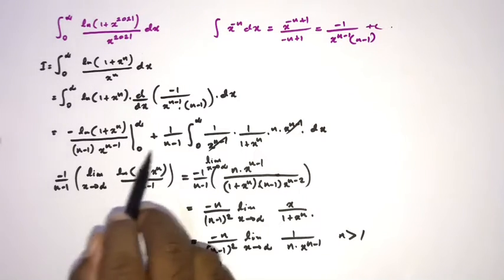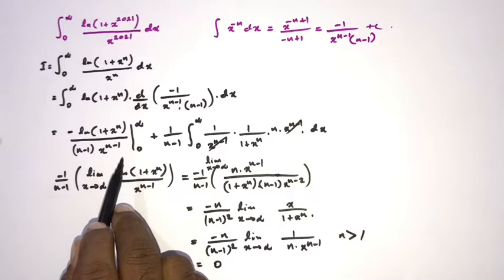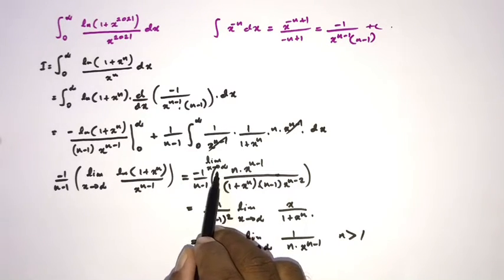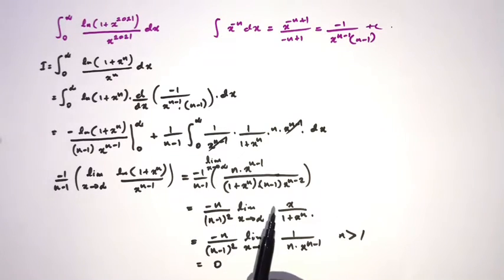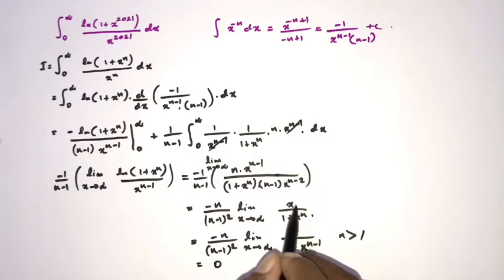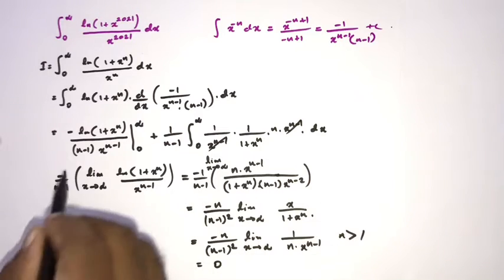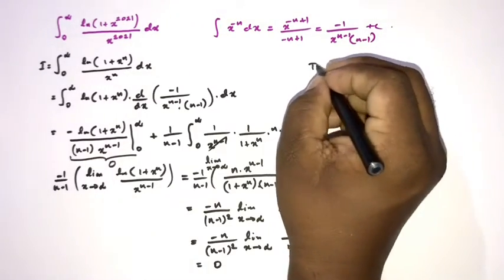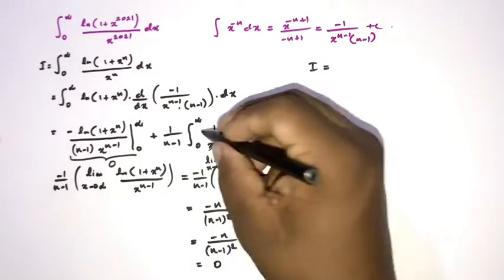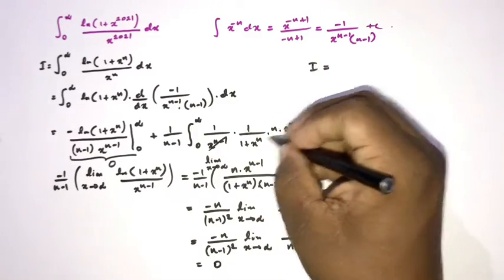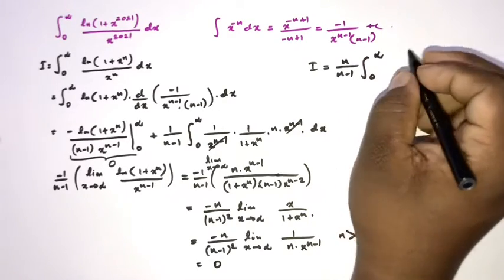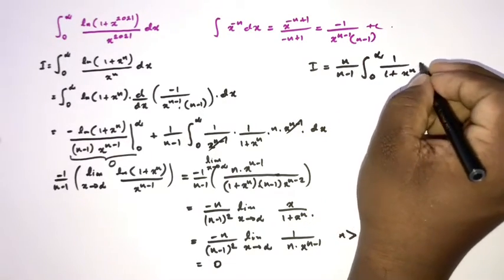For the lower limit, as x approaches 0, x/(1 + x^n) also equals 0. So the entire boundary term vanishes, and I simplifies to n/(n-1) times the integral from 0 to infinity of 1/(1 + x^n) dx.